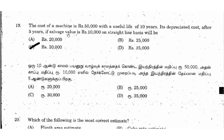Next question. The cost of a machine is Rs. 50,000 with a useful life of 10 years. The depreciated cost after 5 years is asked, given a salvage value of Rs. 10,000 on a straight line basis. We need to calculate the depreciation cost after 5 years using the straight line method.